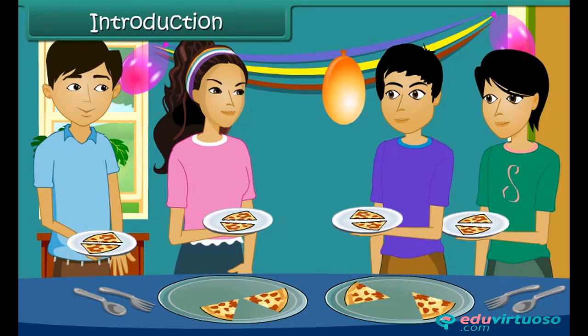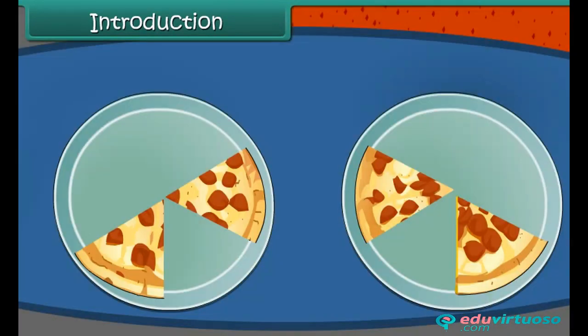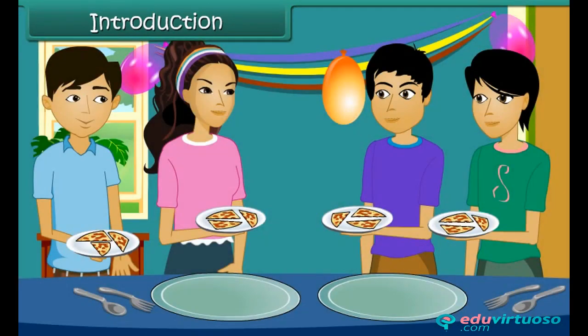She first gives two slices each to her three friends and herself. She is still left with four slices. She gives one more slice to each of her friends and herself. Thus, Rashmi successfully divides the two pizzas equally.